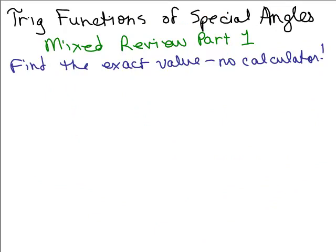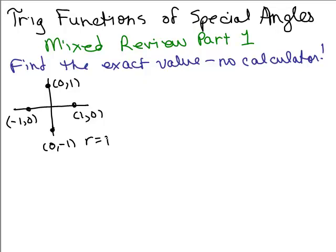All right, so we're going to do some mixed review problems by finding the trig functions of the special angles. That means either it's on the quadrant, so if it's on the quadrant, remember we're going to remember these values: either 1, 0, or 0, 1, or negative 1, 0, or 0, negative 1. So that will tell you your X and Y value in every case and in all of these, the R is going to be 1.